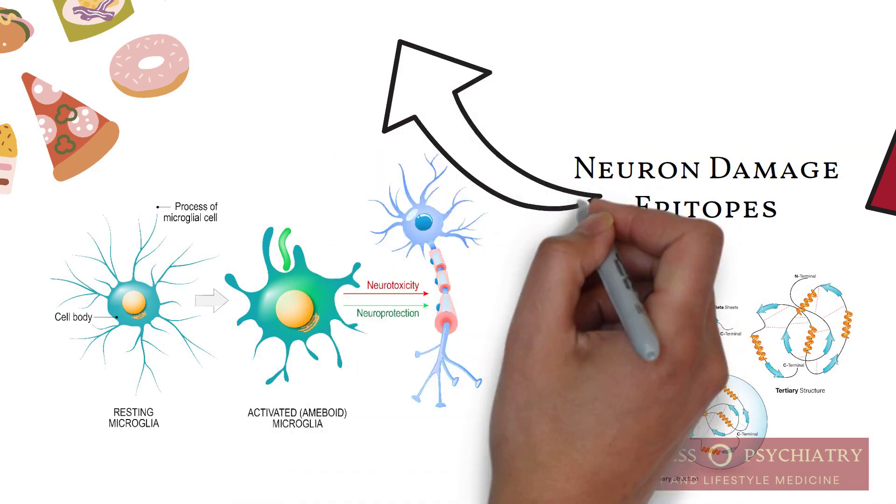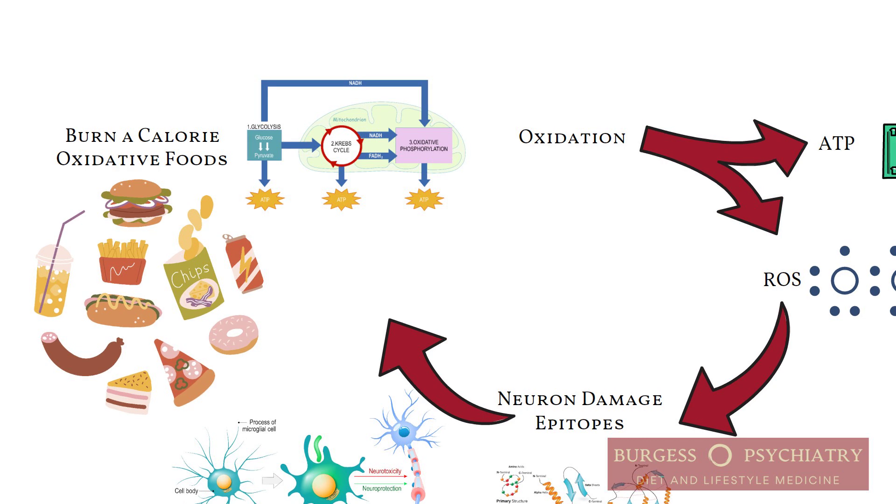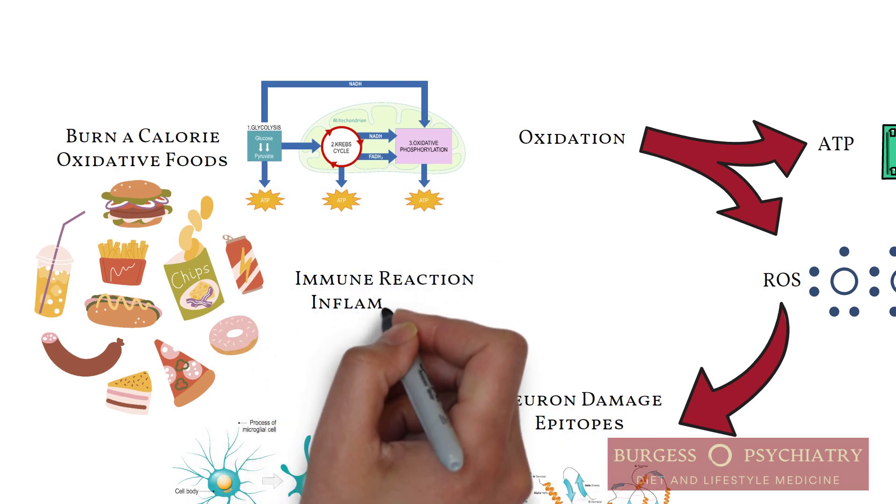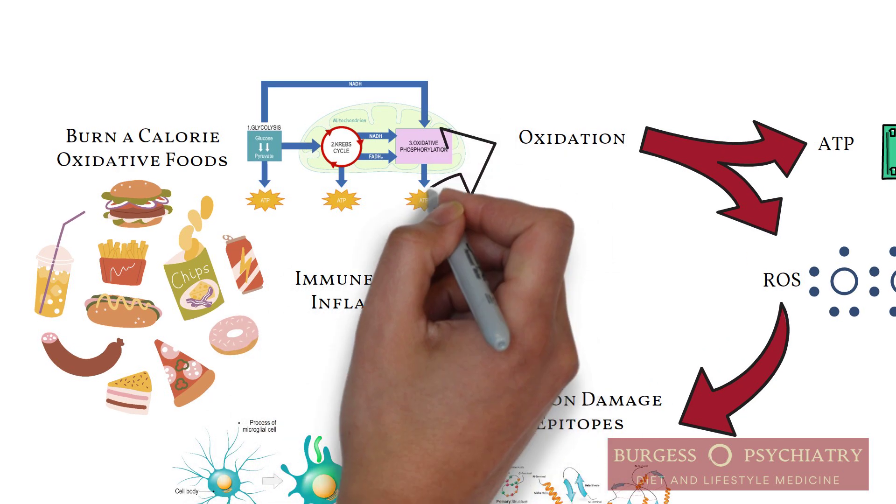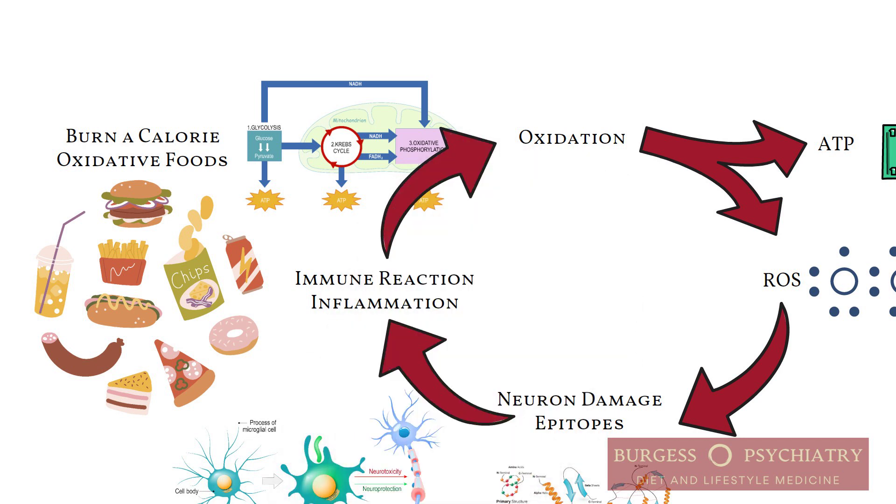The immune system says, 'That doesn't look right. Something is off. This is not the protein's baseline.' So the immune system reacts, and it causes an inflammatory reaction. Inflammatory reactions in and of themselves are oxidative processes. And so you end up in a cycle of oxidative stress and inflammation. But it doesn't have to be that way.